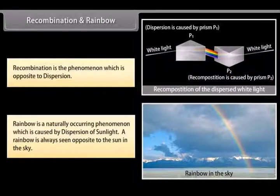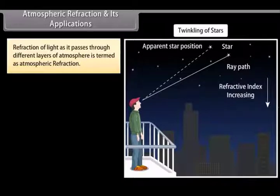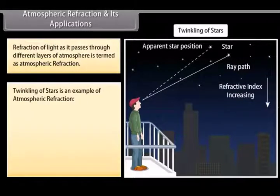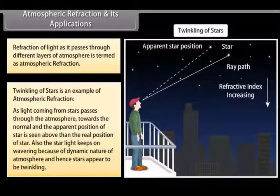Atmospheric refraction: Our atmosphere is not uniformly dense. Depending on local conditions, it may have hot and cool air near the ground. Hot air is lighter than cooler air and has a lesser refractive index. Due to this, starlight or sunlight entering the atmosphere undergoes refraction, known as atmospheric refraction. As light from stars passes through the atmosphere, the apparent position of a star is seen above its real position. The starlight keeps wavering because of the dynamic nature of the atmosphere, causing stars to appear to twinkle.